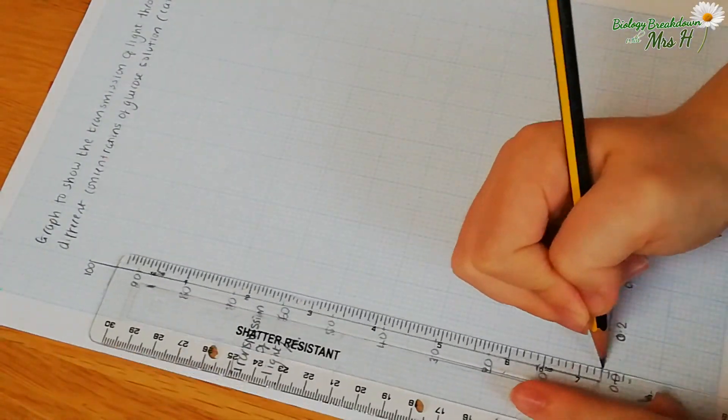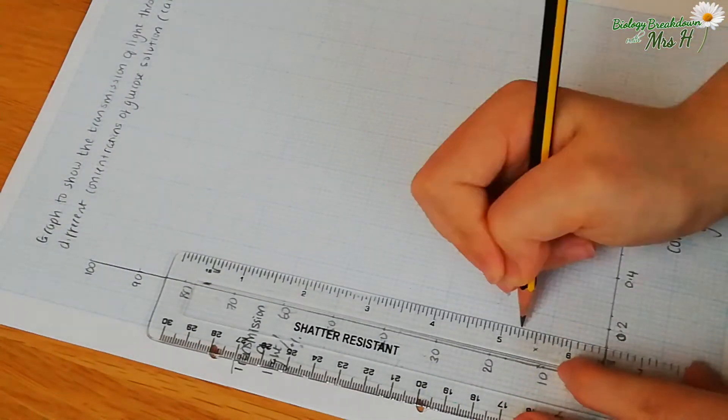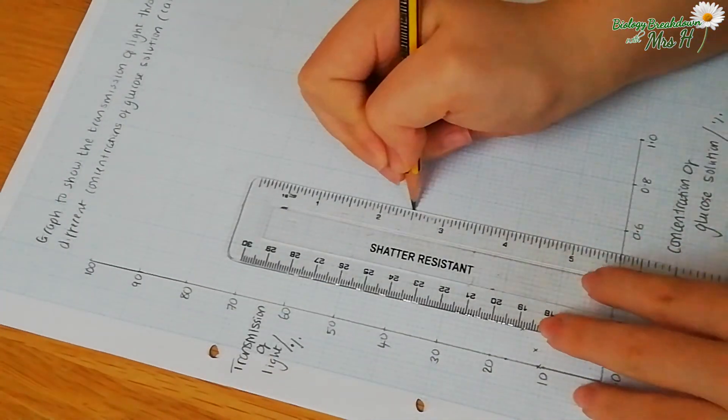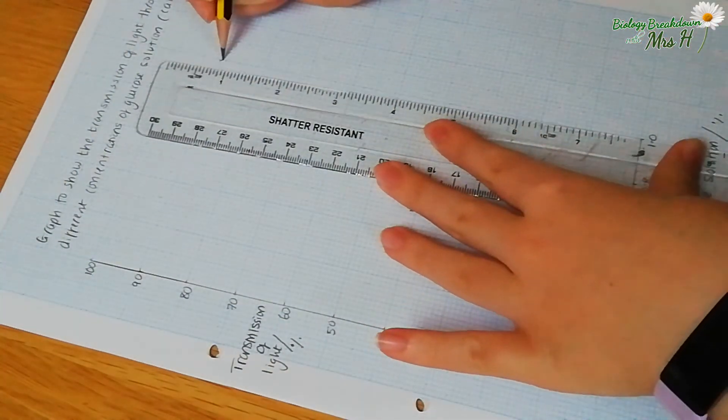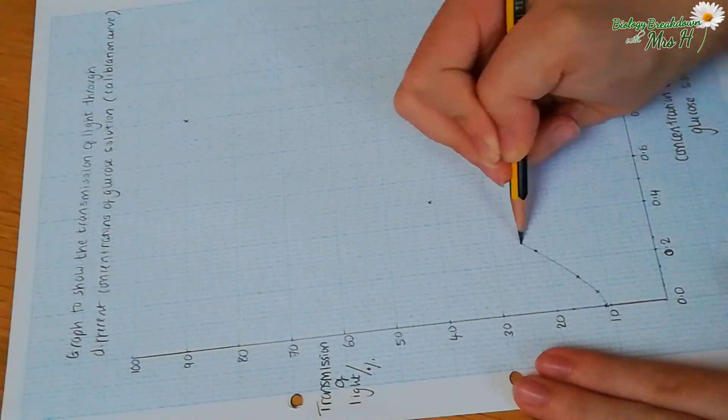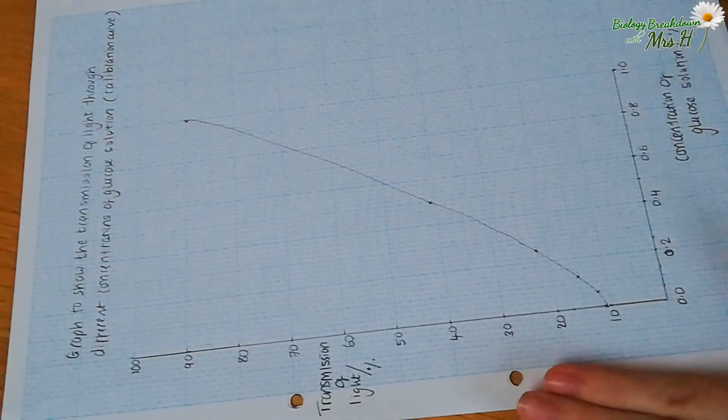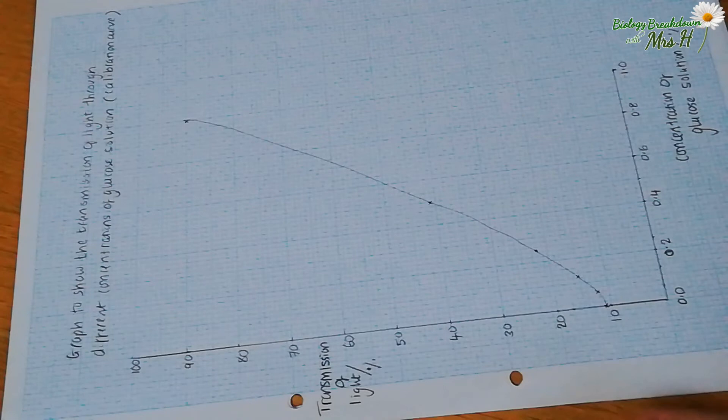Plot your points and either do a straight line of best fit or a curve of best fit. It depends what your results look like. If you look at my results, they do look like a nice curve of best fit, so that's what I'm going to do. Once we have our curve, we can then use it to find out the concentration of our unknown glucose solution.